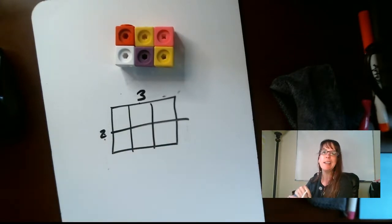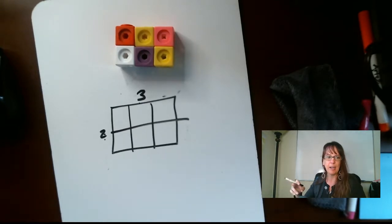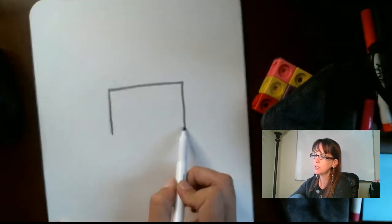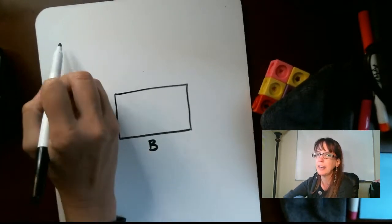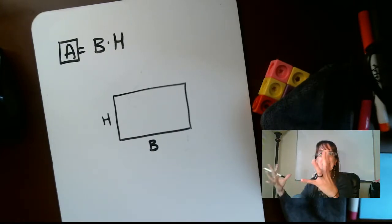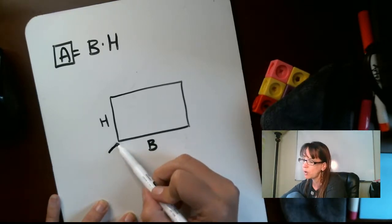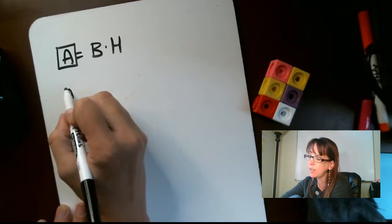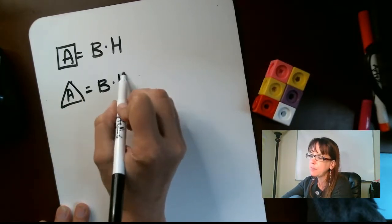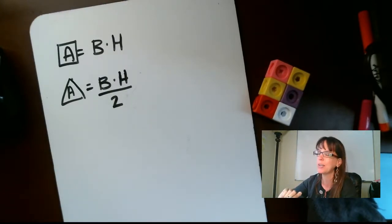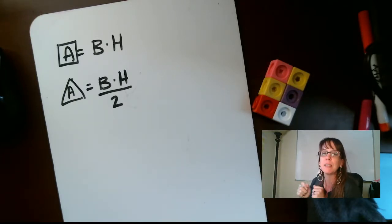We multiply the base times the height to get the area — that's for rectangles. We'll also talk about triangles. So the area of a rectangle is base times height. If I draw a line cutting a rectangle in half, I get a triangle. The area of a triangle is base times height, but we cut it in half. Write these two formulas down in your notes — flag them, star them — because you will be referencing these quite a bit.